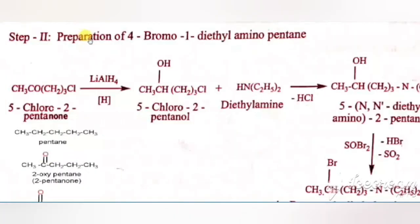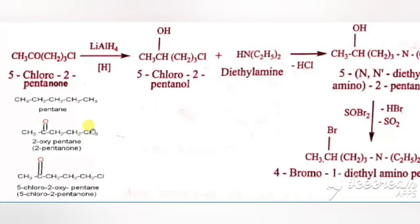Step 2 is preparation of 4-bromo-1-diethylaminopentane. The starting material is 5-chloro-2-pentanone (CH3CO–CH2–CH2–CH2–Cl). Pentane is a 5-carbon alkane; the 2nd carbon has a ketone (oxo), and the 5th carbon has chlorine. This undergoes reduction by lithium aluminum hydride — the ketone is reduced to a secondary alcohol, giving CHOH instead of CO.